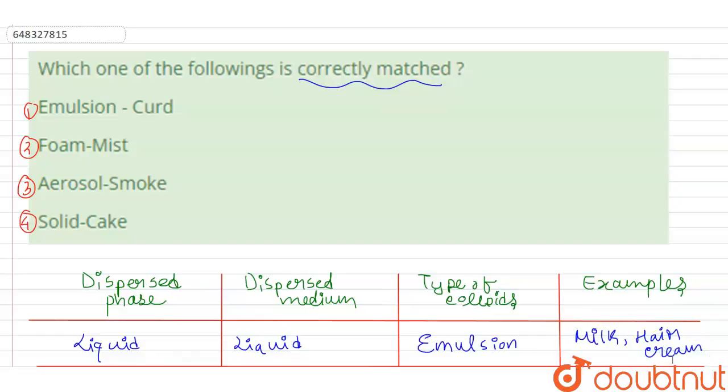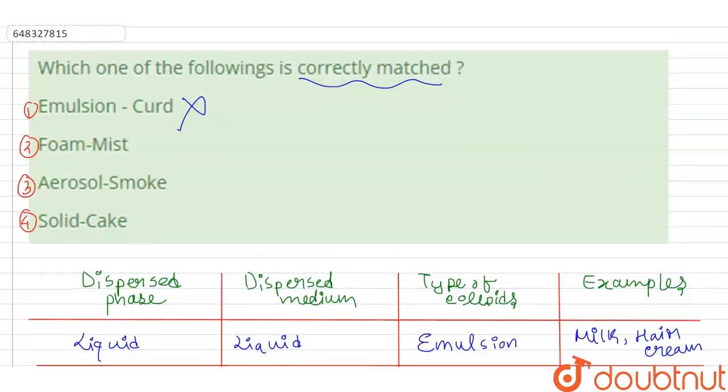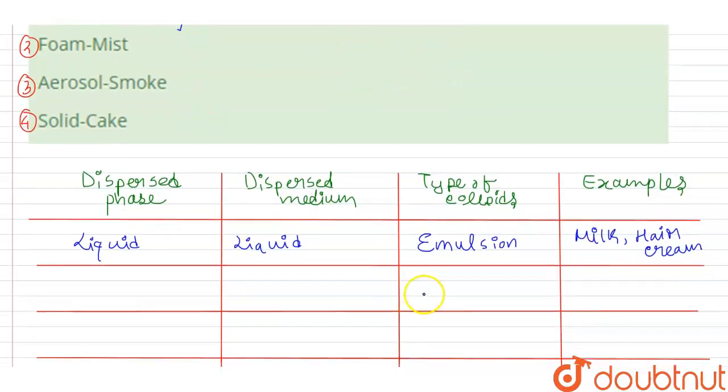So the first option will be incorrect. And for the next option that is foam, type of colloid is foam. So what do we know from foam, when the dispersed phase is gas and dispersed medium is liquid then the type of colloid formed is foam and some examples of foam are froth and whipped cream.